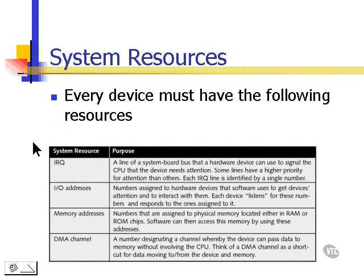Every device in a computer needs resources in order to be able to function. These are called system resources. One of these is an IRQ, which is a way that a device will use to interrupt the processor, letting it know that that device needs attention. Another system resource is an I/O address, or input-output address — this is a special number assigned to a hardware device that the software will use to get that device's attention.